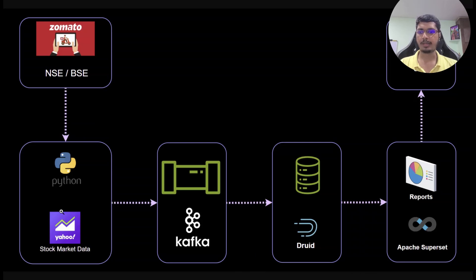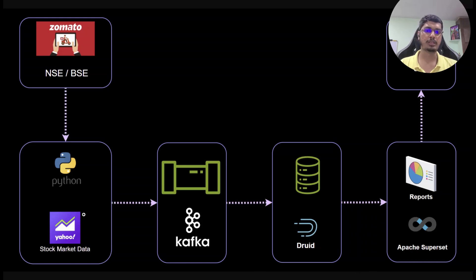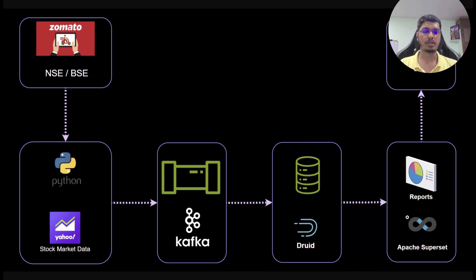The reason I'm calling it near real-time is because from the Python API we are going to pull data every 12 seconds. The Yahoo Finance yfinance API, even if you run it every 10 seconds or every one second, it will return the same value. So instead of doing that, let's set it to 11 or 12 seconds and consume it into Kafka. From Kafka it will be consumed into Druid, and then from Druid we will try to build a near real-time report of that stock information into Apache Superset using a line graph or something like that.